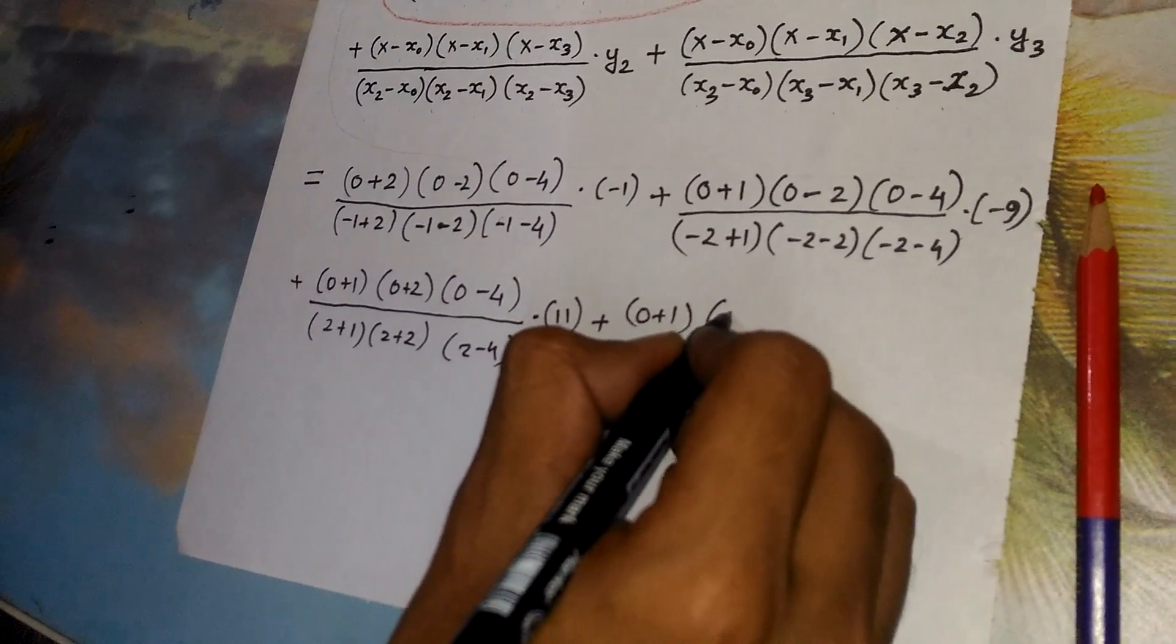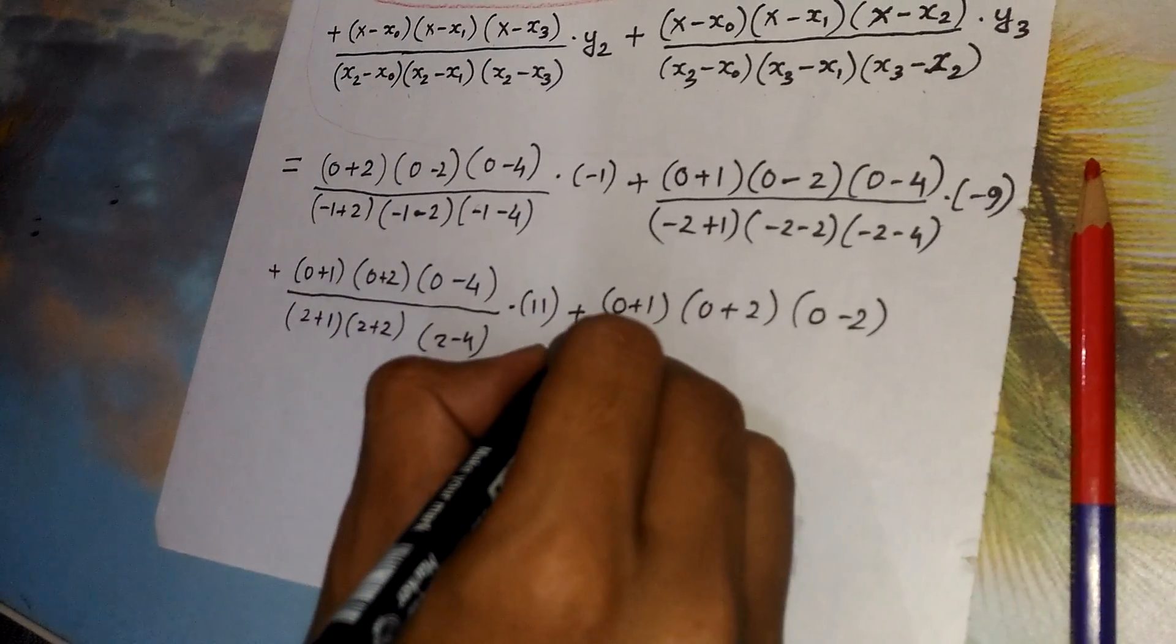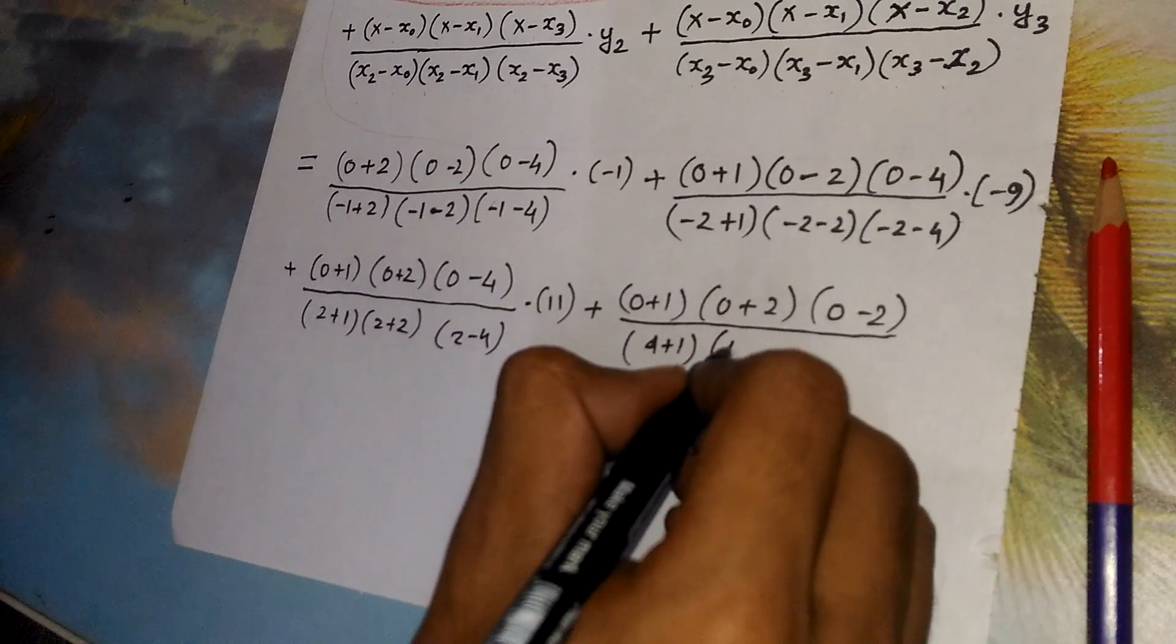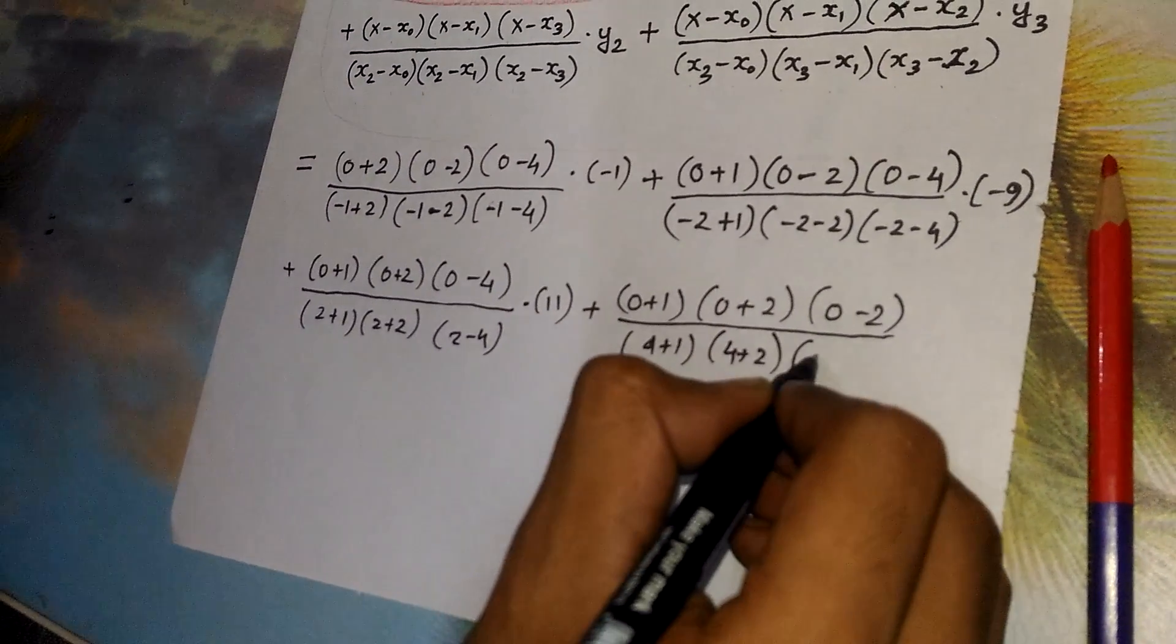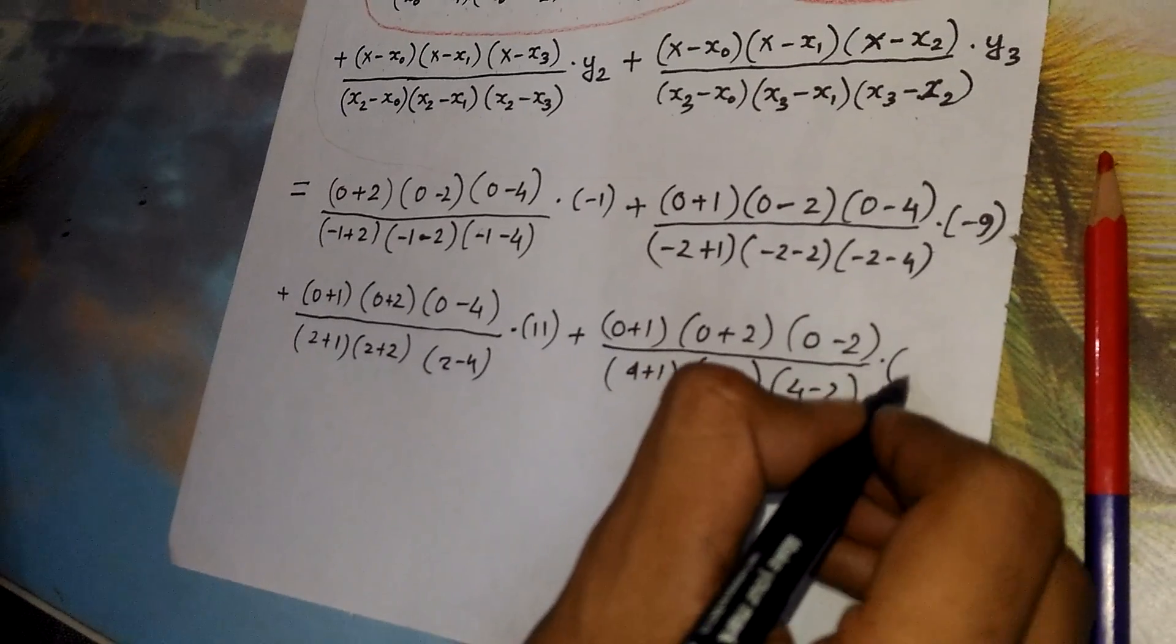Plus the last step, it's 0 plus 1, 0 plus 2, 0 minus 2 by 4 plus 1, 4 plus 2, 4 minus 2 whole multiplied by 69.